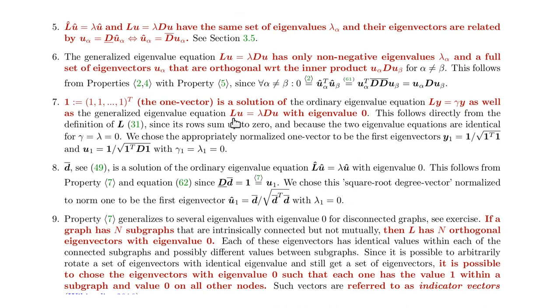That's why if you multiply L with a one, one, one, one vector, you get zero out and then this is equal to the right side if you choose lambda to be zero.